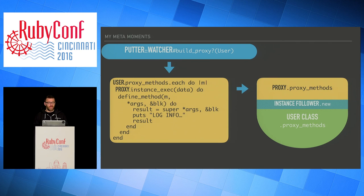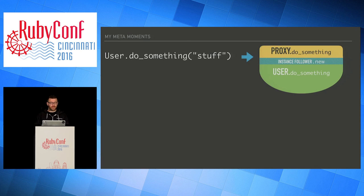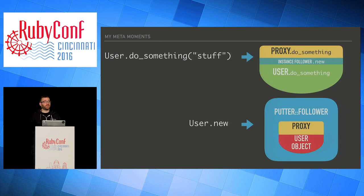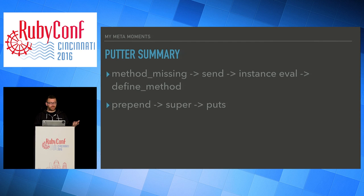So this is what Putter looks like: we have this object which has a proxy with four of the methods proxied, an instance follower, and a user class. When user does something — a class method — it calls do_something on the proxy, then on the user. User.new actually returns this and lets us know that we called that new method. In summary, we use method_missing to call send with instance_eval inside of define_method. We also prepend a proxy that calls super but puts a bunch of information. We're also able to override new, which follows all instances.